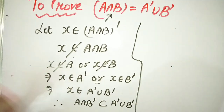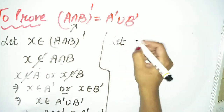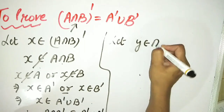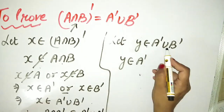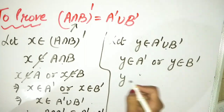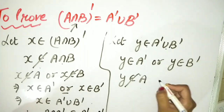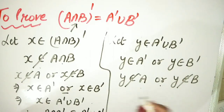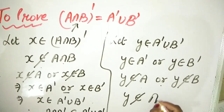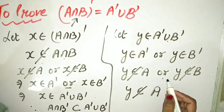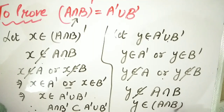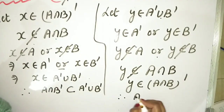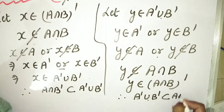Now come to the right hand side. Let y belong to A complement union B complement. Union means 'or', so y belongs to A complement or y belongs to B complement. Since it doesn't belong here, we use intersection. Therefore, y doesn't belong to A intersection B, which means y belongs to A intersection B complement.